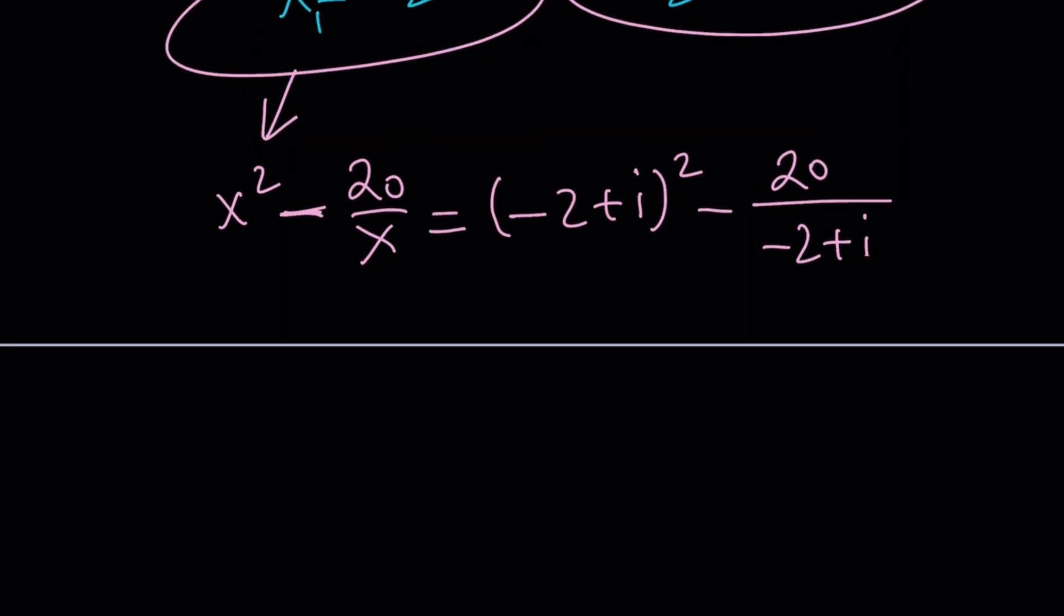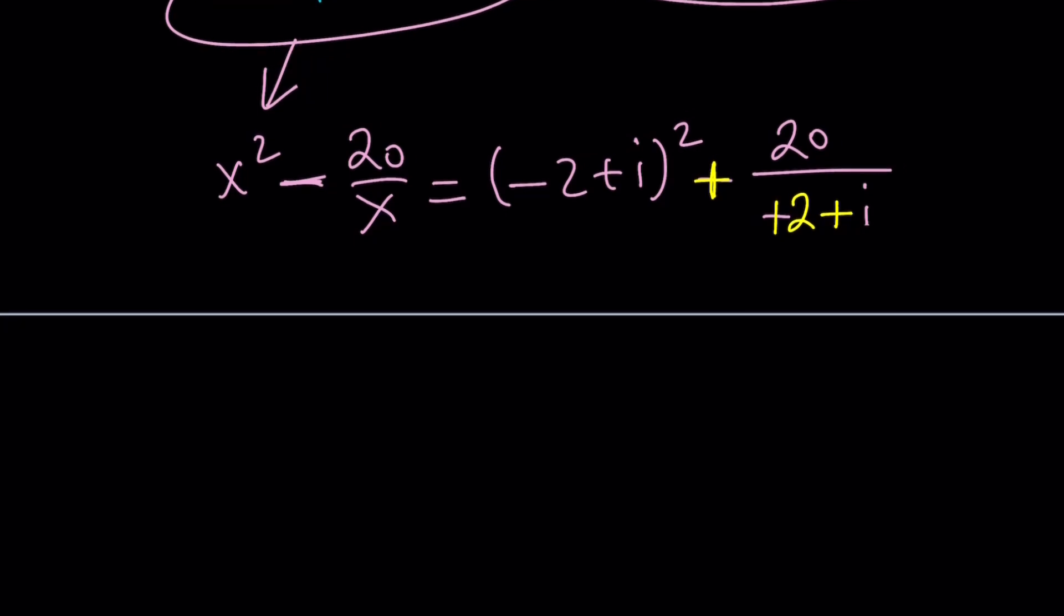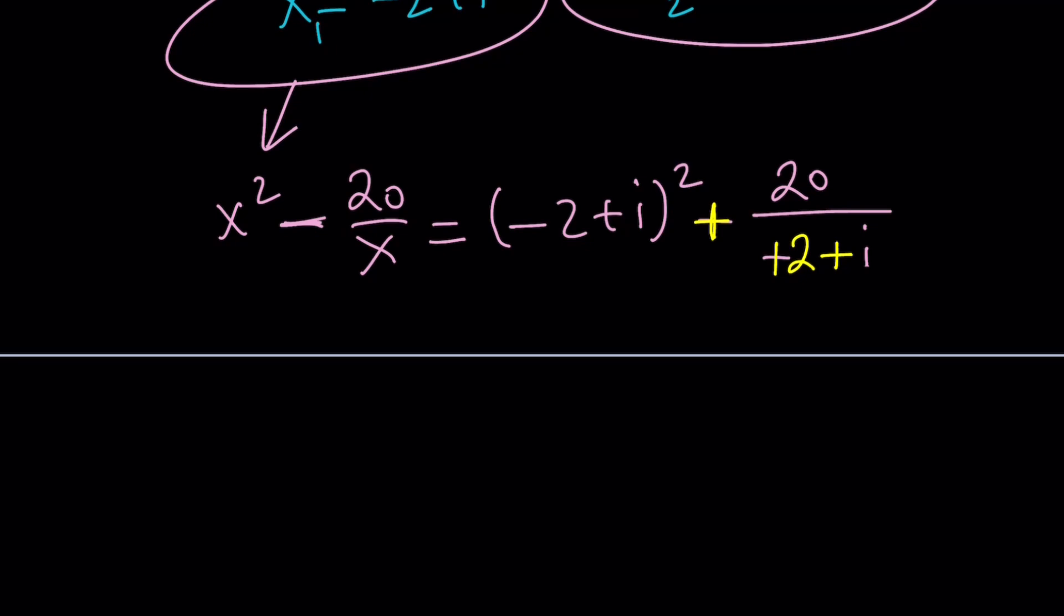We square minus 20 divided by negative 2 plus i. There's a lot of negativity here. Let's fix it by changing this to a plus sign and changing it to a plus sign. I'm basically negating the denominator and then negating the sign in front so that double negation will give us a positive. Let's square this: negative 4 minus 4i. To simplify, I'm going to multiply top and bottom by the conjugate.